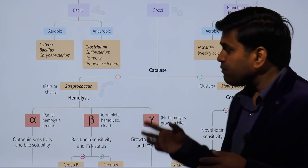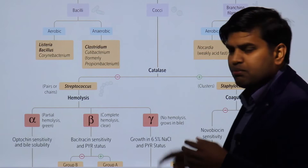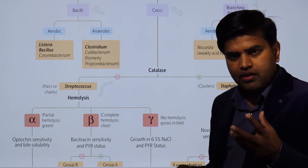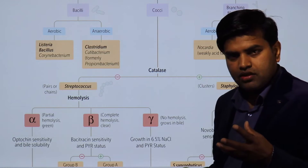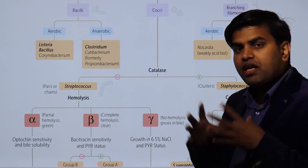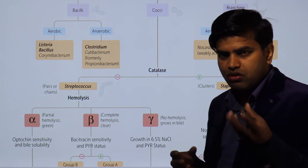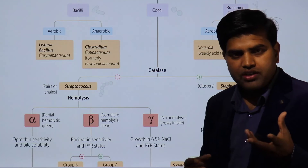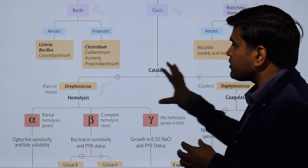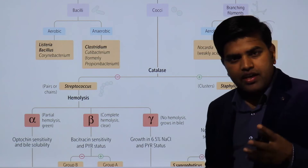Gram positive bacteria are mainly cocci, with only a few bacilli. In contrast, gram negative bacteria are mainly bacilli, with only one or two cocci such as Neisseria and Moraxella. We will now focus on gram positive bacteria.